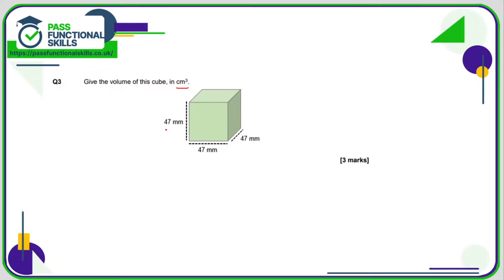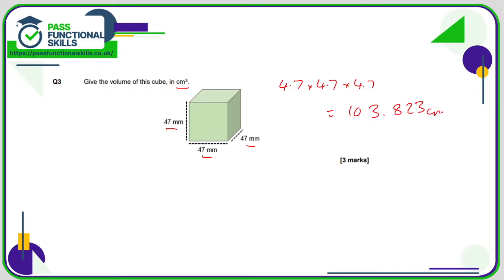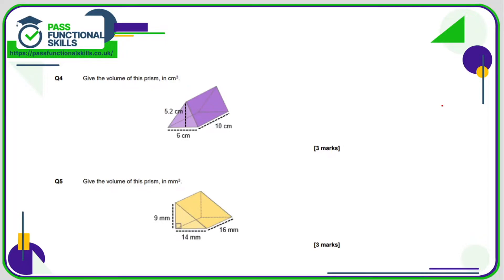Here the volume is going to be given in cubic centimeters but the dimensions are in millimeters, so let's turn them into centimeters. That's 4.7 times by 4.7 times by 4.7, and 4.7 cubed is 103.823 cubic centimeters.